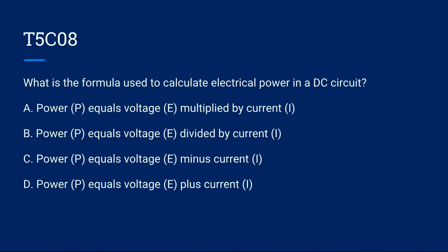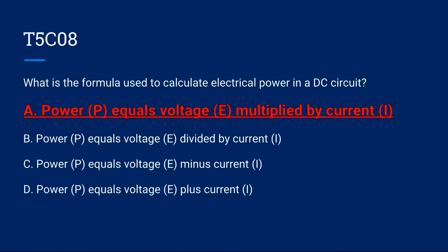T5C08: What is the formula used to calculate electrical power in a DC circuit? A. Power equals voltage multiplied by current, B. Power equals voltage divided by current, C. Power equals voltage minus current, or D. Power equals voltage plus current. Correct answer is A. Power equals voltage multiplied by current.